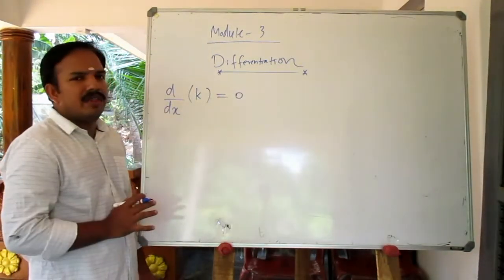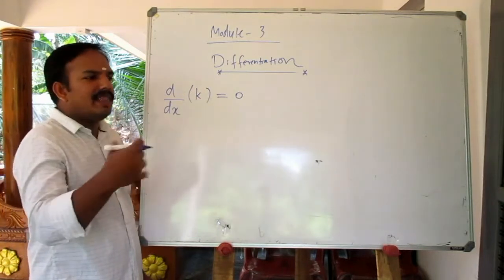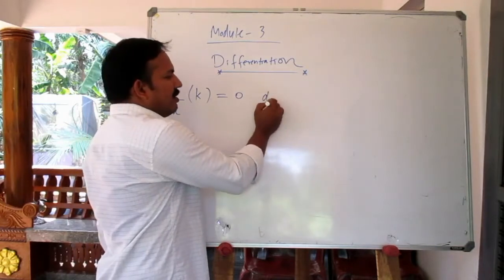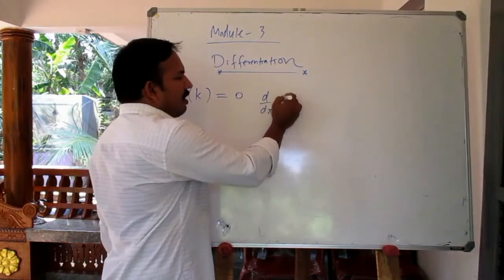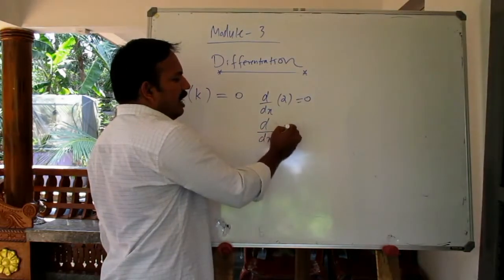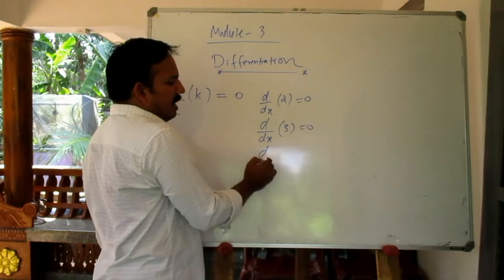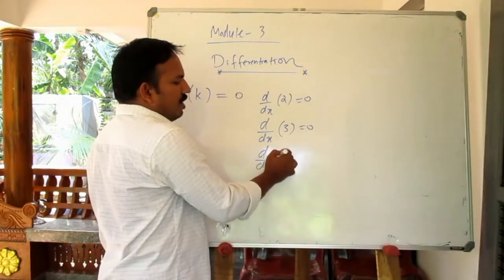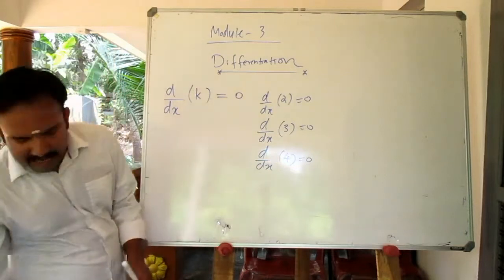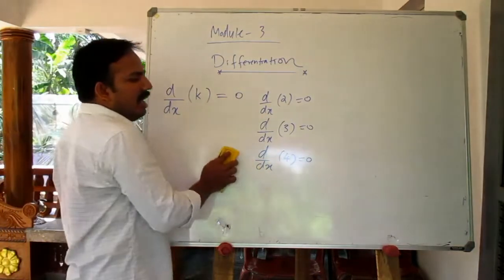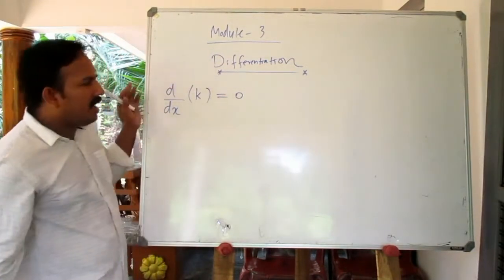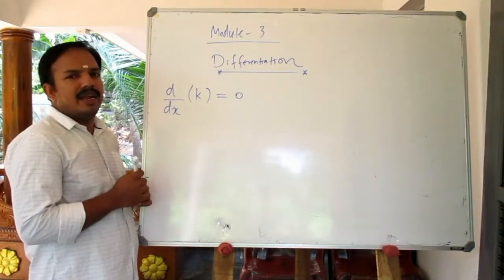What is a constant? X is not a constant. For example, d by dx of 2 is 0. d by dx of 3 is 0. d by dx of 4 is 0. If it is not a variable, the derivative is 0. So d by dx of k equals 0.